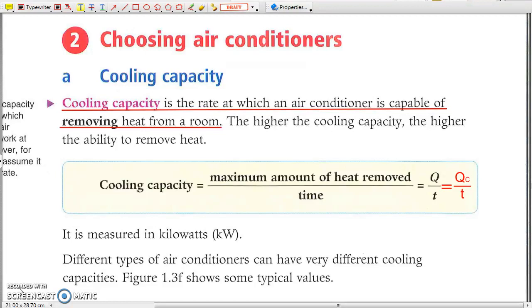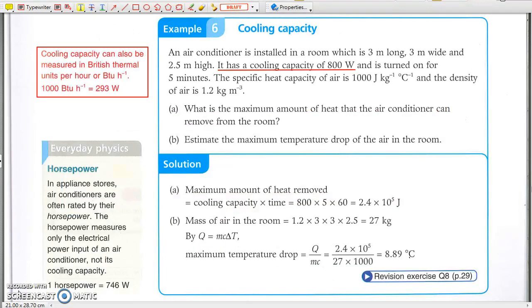Its unit is kilowatt. A cooling capacity of 800 watt means the air conditioner removes 800 joules of energy to the outdoor per second, which does not include the electrical energy consumed by the air conditioner itself.